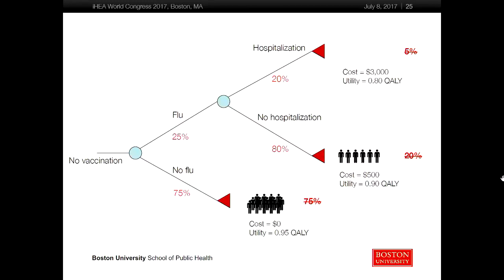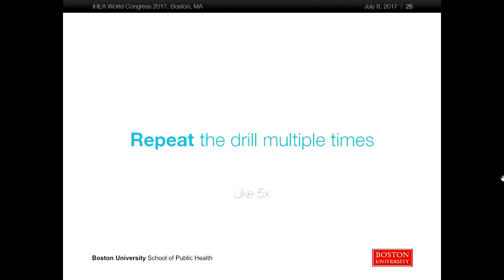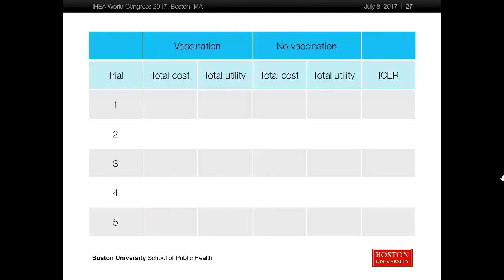They can put all the numbers together and calculate the ICER — first the total cost, total effectiveness, then the ICER. Then you repeat the drill, say five times, so that you actually get some variation in the cost, utilities, and ICER. You put all the outcomes in a table. If you have a nice board, you can plot the outcomes on it, which really conveys the variation introduced with stochastic modeling and shows the uncertainty inherent in modeling cost-effectiveness problems.